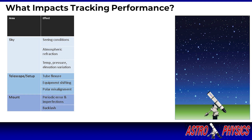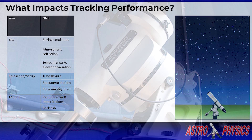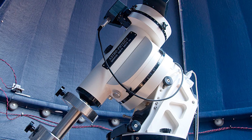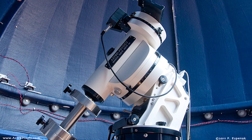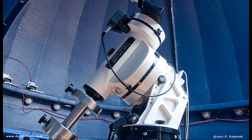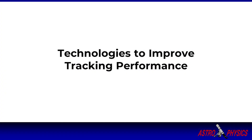Finally, mounts bring their own challenges. Minute imperfections in gears create tiny repeatable errors known as periodic error. Other small imperfections such as tooth imperfections, dirt in the gears, and poorly adjusted gear trains may contribute additional error. Backlash in the dec axis can also add challenges when guiding. That's not to say all mounts are created equal — premium mounts such as astrophysics are designed, machined, and assembled with the tightest tolerances available to minimize these effects.